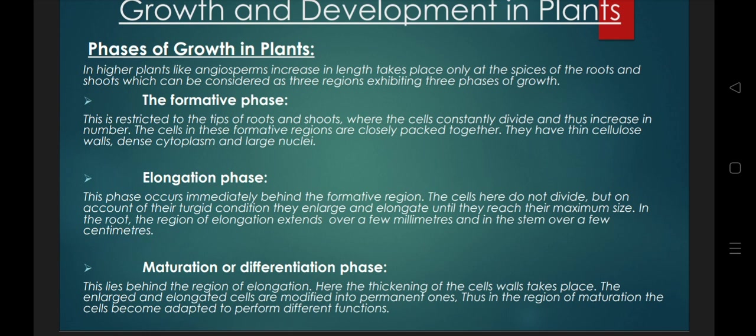In the elongation phase, cells are maximally enlarged and elongated until they reach their maximum size. The region of elongation in the root extends over a few millimetres, while in the stem it extends over a few centimetres. The zone of elongation consists of these elongated cells.